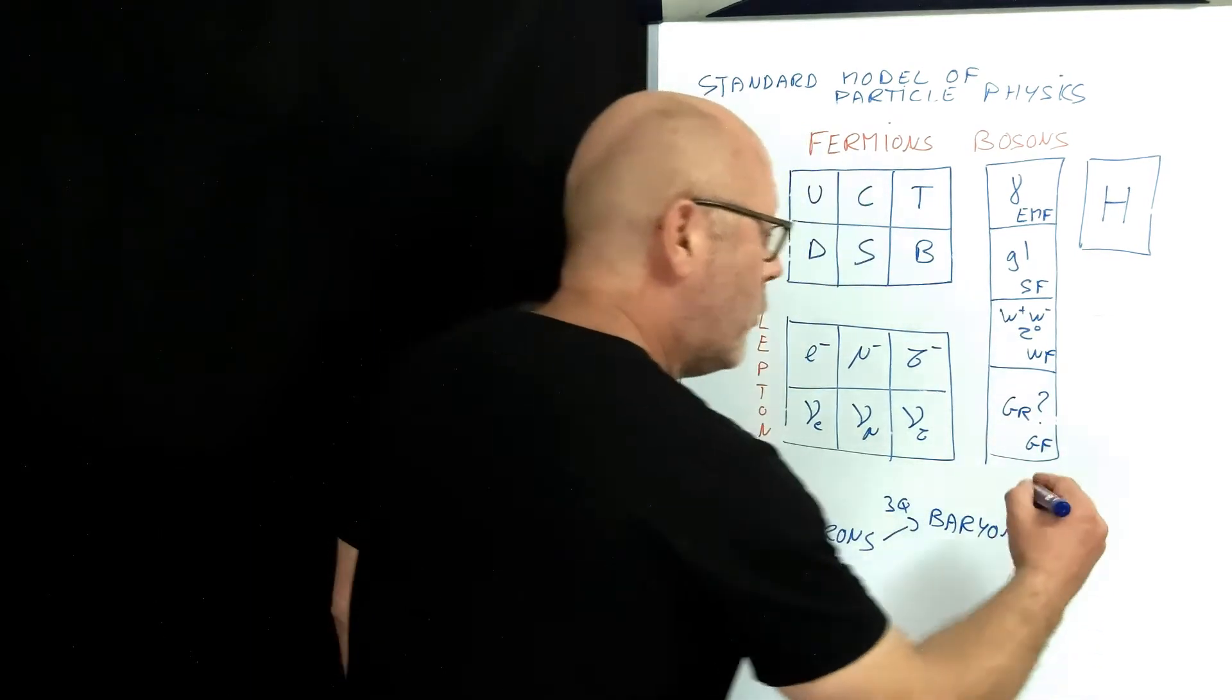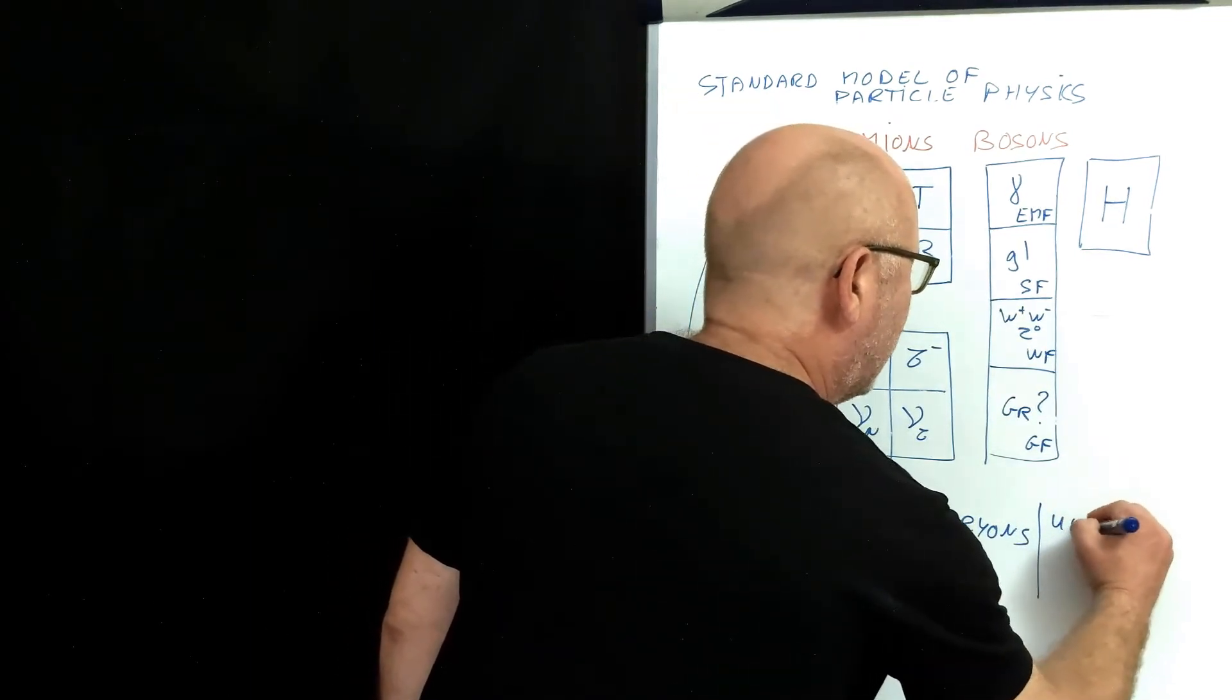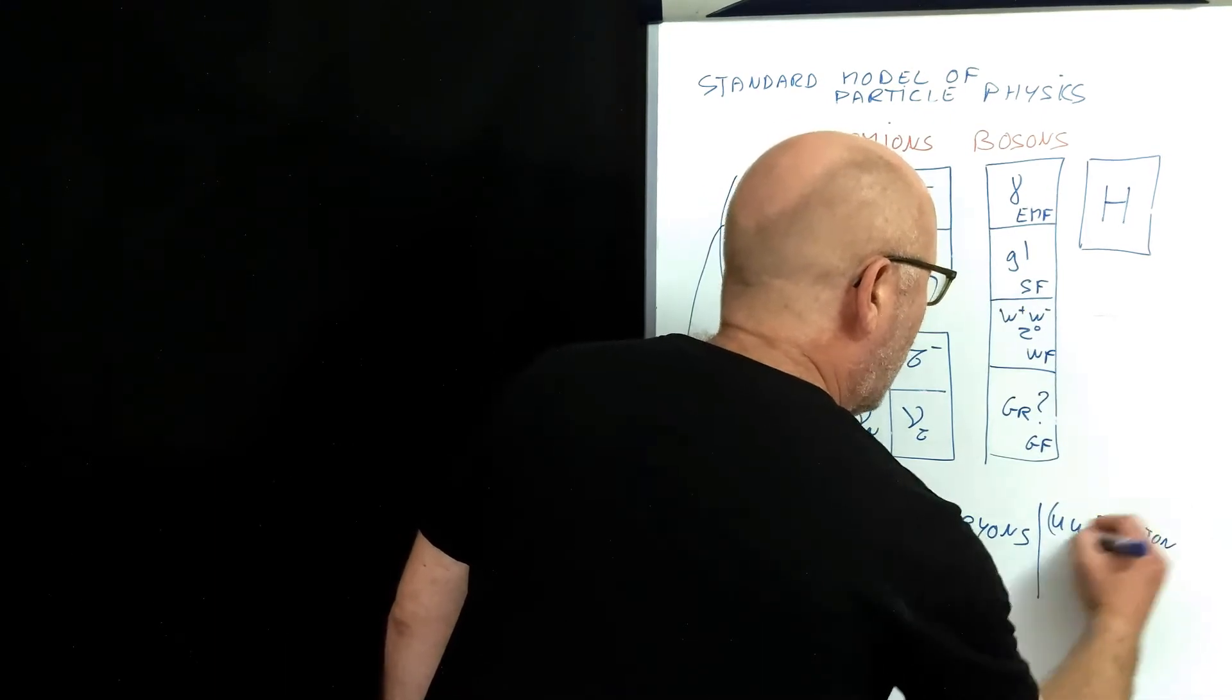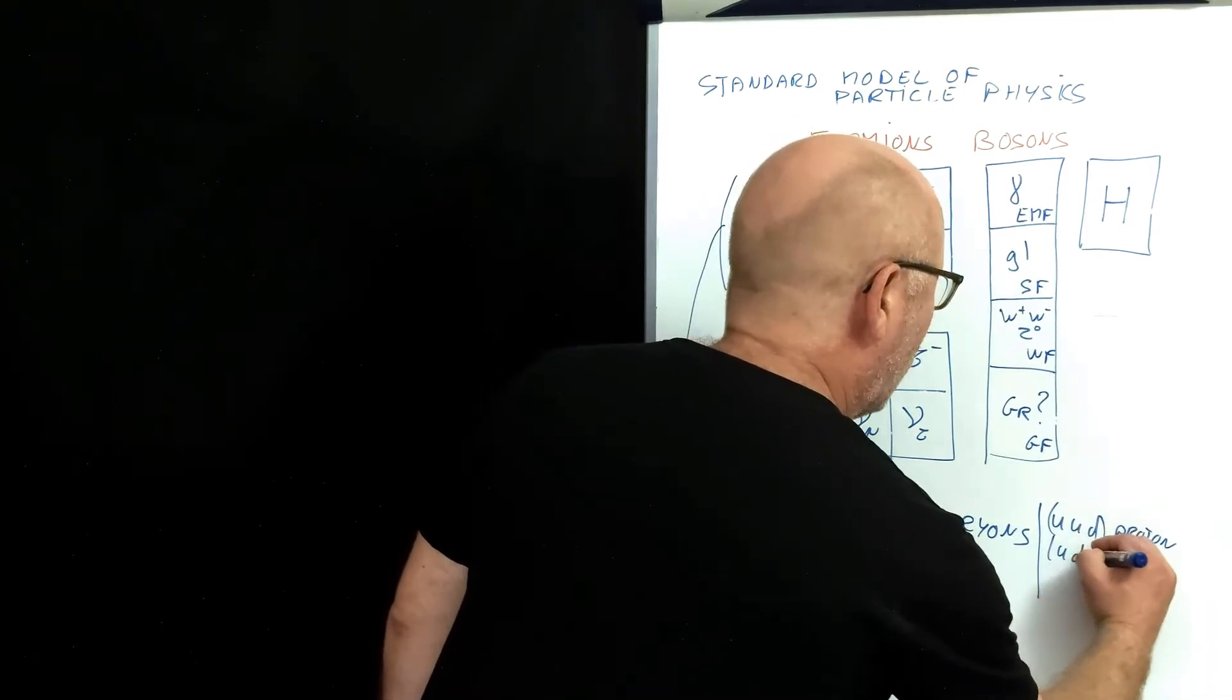For example, you have the proton, which is up, up, down. That's a proton. Or the neutron, up, down, down.